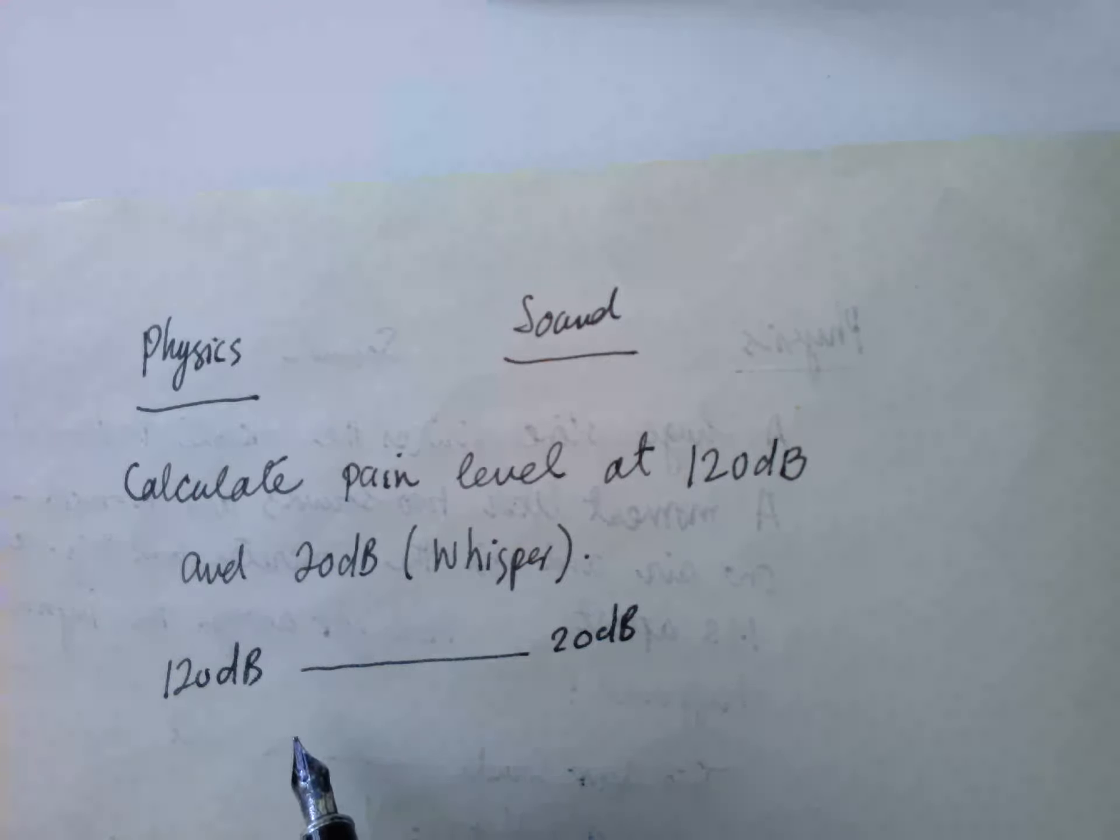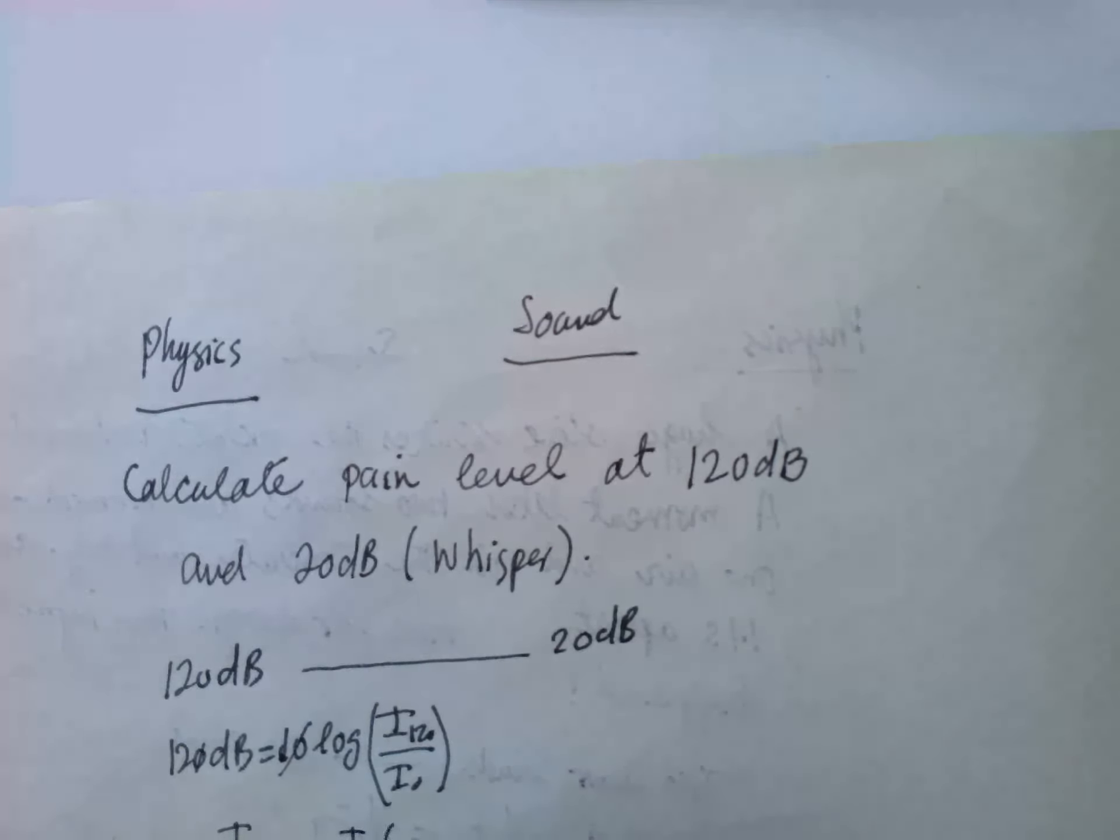So what is the pain level? We can see this 120 dB, it is equal to 10 log of I₁₂₀ over I₀. So that means I₁₂₀ dB, it is equal to 10 to the power 12, I₀ into 10 to the power 12.